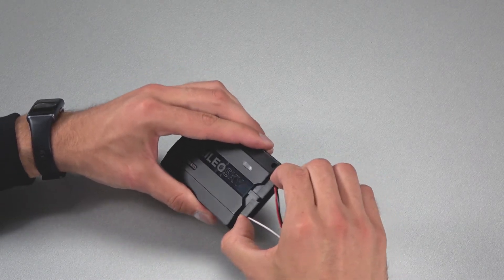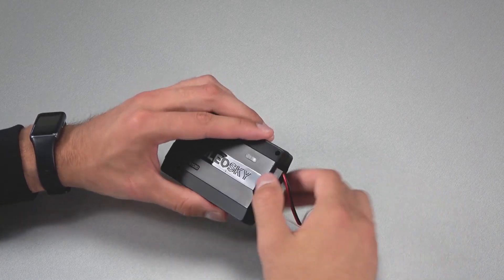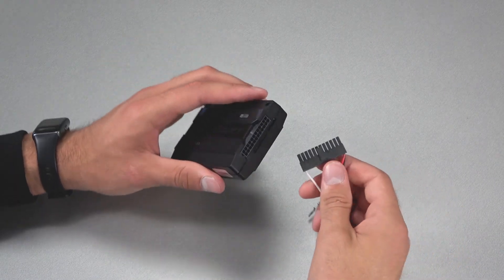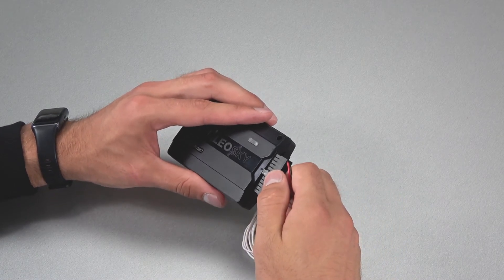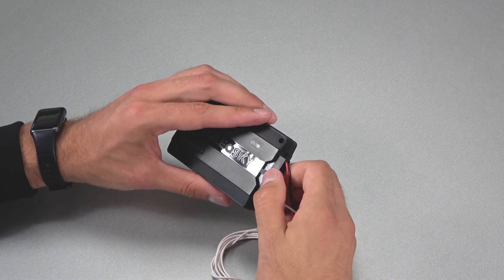If you need to disconnect the connector from the tracker, press the latch tab and carefully pull the connector out of the device. Don't pull on the wires. Remove the block by holding it by the plastic part.